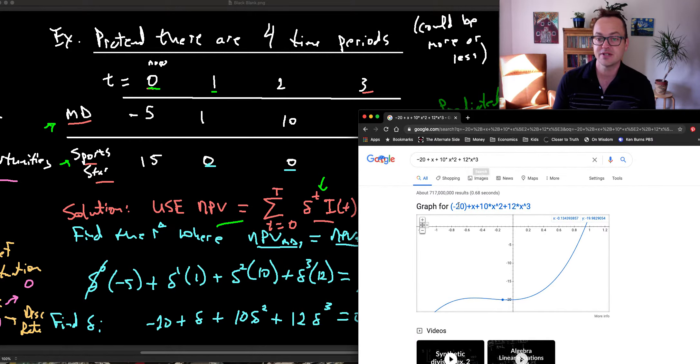Minus 20 plus x plus 10 times x squared plus 12 times x to the third. So this brings up this graph. And when that's equal to 0, when x is solved for 0, the answer is 0.941, I believe that's correct. So approximately, when y is 0, I get 0.945.